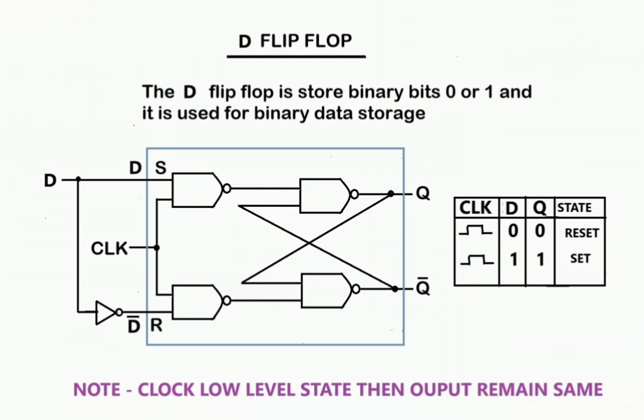When D equals high or 1, output Q also equals 1. This is the set state.